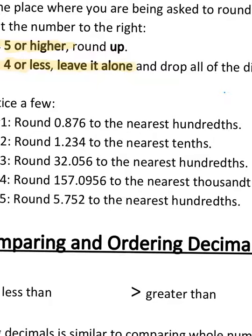We're gonna round 0.876 to the nearest hundredth, which is right there. So we need to look next door, and since six is greater than, is five or greater, we're gonna round this space up to eight, so that'd be 0.88.